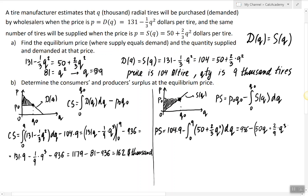104 times 9 evaluated between 0 and 9. So I have 936 minus 50 times 9 plus two-ninths times 9 cubed. And when we evaluate that at 0 we just get 0.